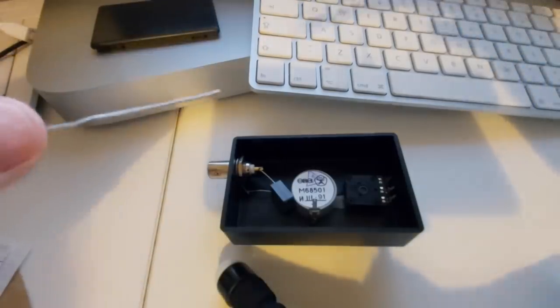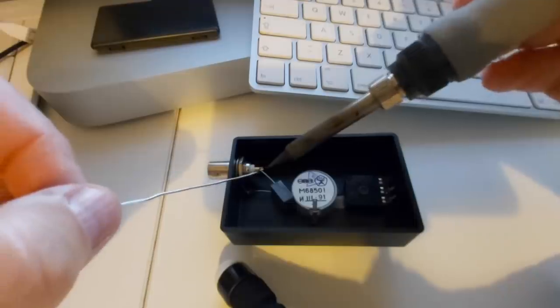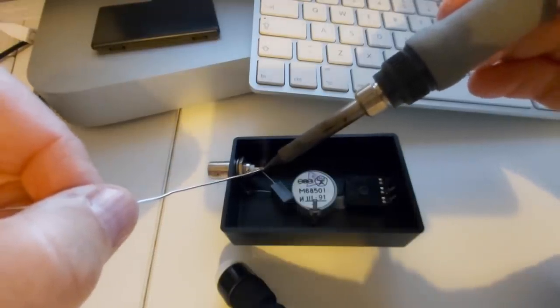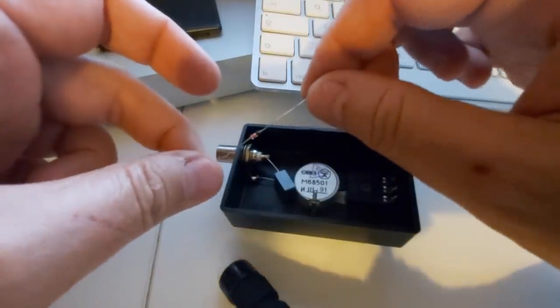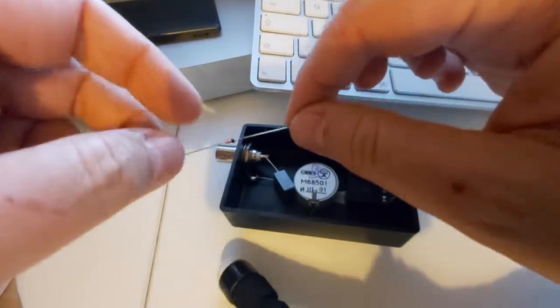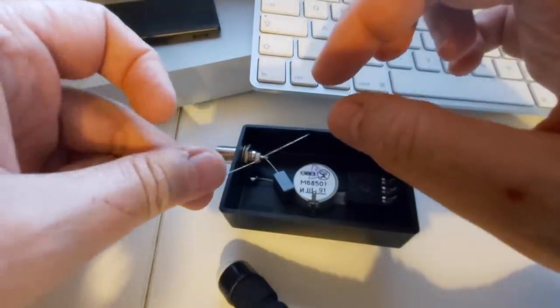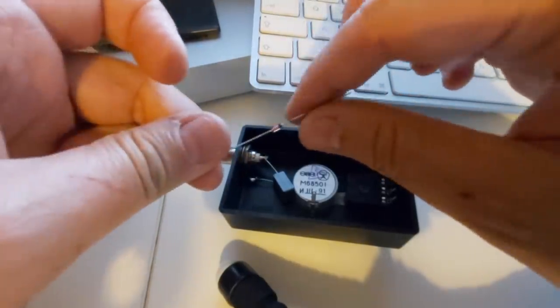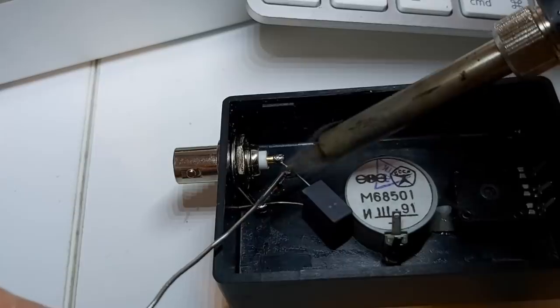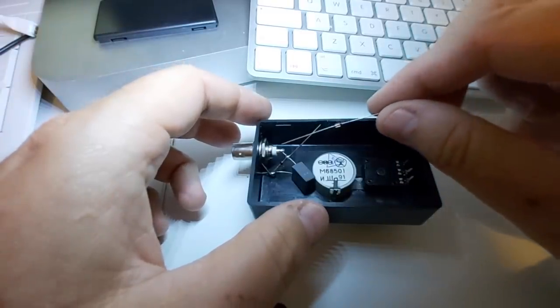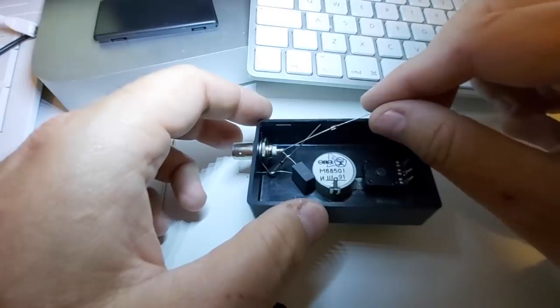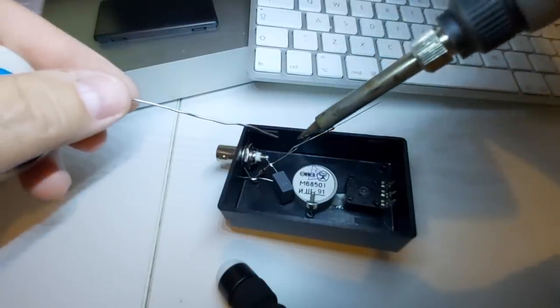I'll start with the 47 nanofarad capacitor and I'm going to solder that on the BNC. One of the diodes is going to be soldered onto that, and be careful of the polarity here. Like so, center of the BNC and the other side to the ground. The second diode will be attached, soldered to the first one here.